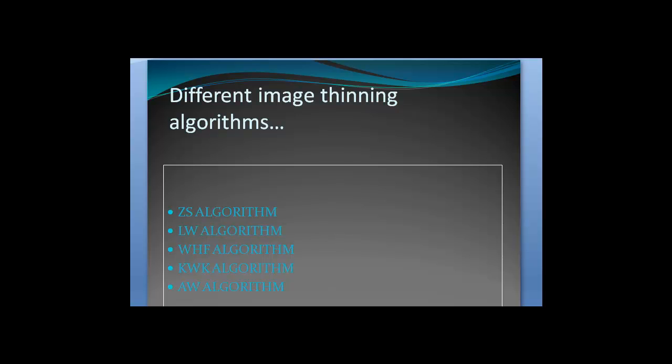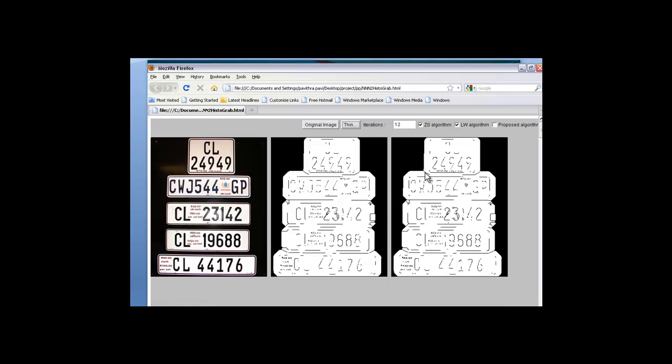There were many other algorithms for thinning used before, like the ZS algorithm, LW algorithm, WHF, KWK and AW algorithms. Let us see two of the previously proposed algorithms: the ZS algorithm and the LW algorithm.